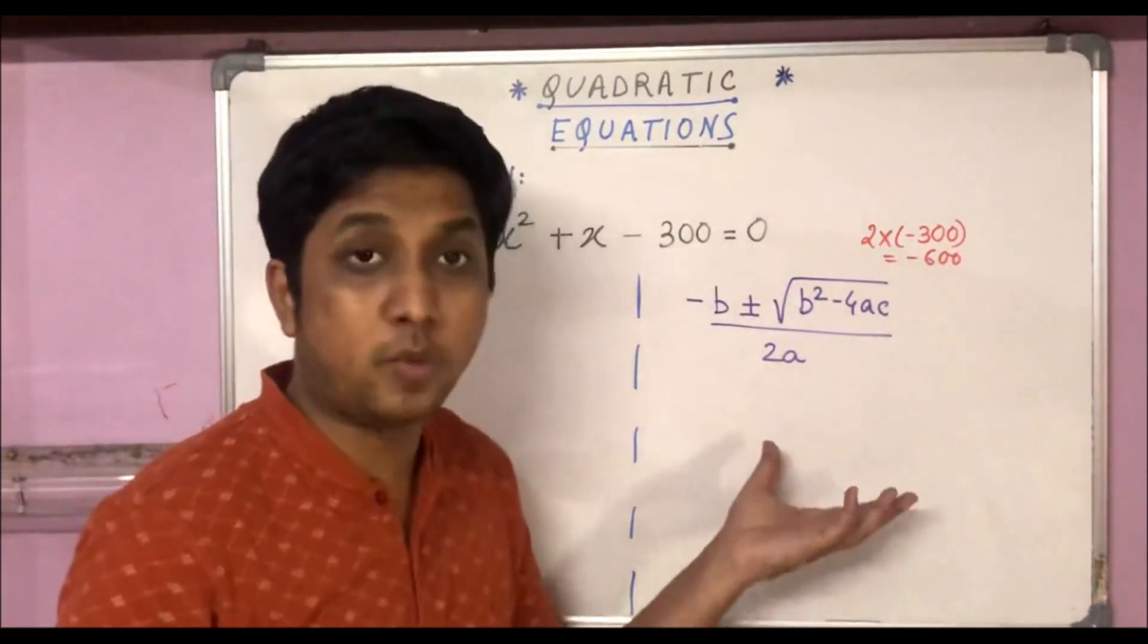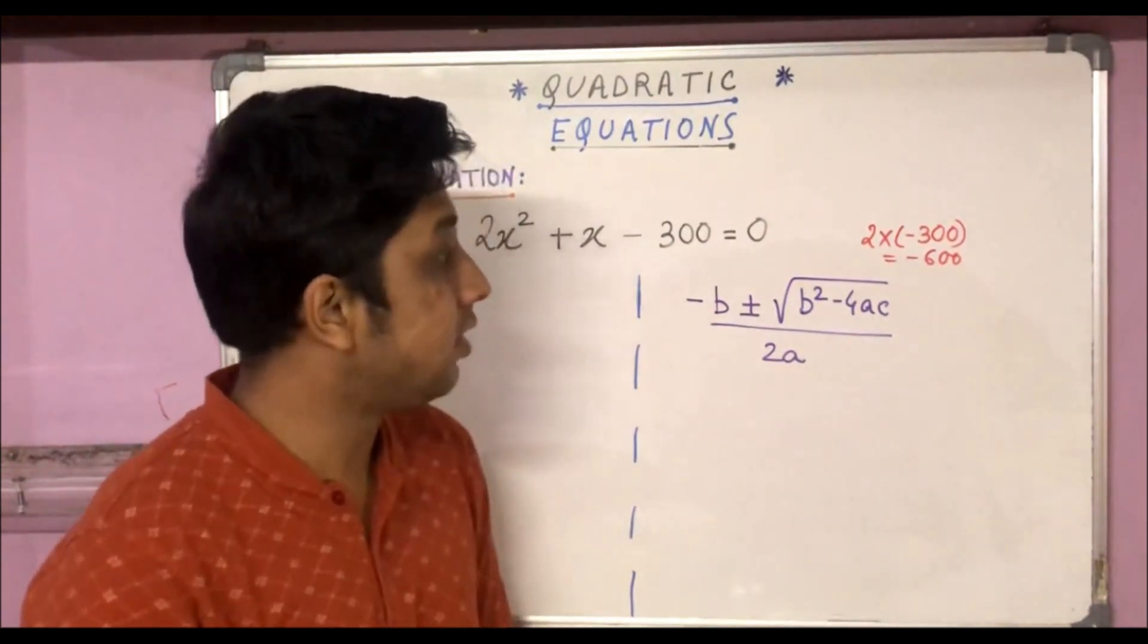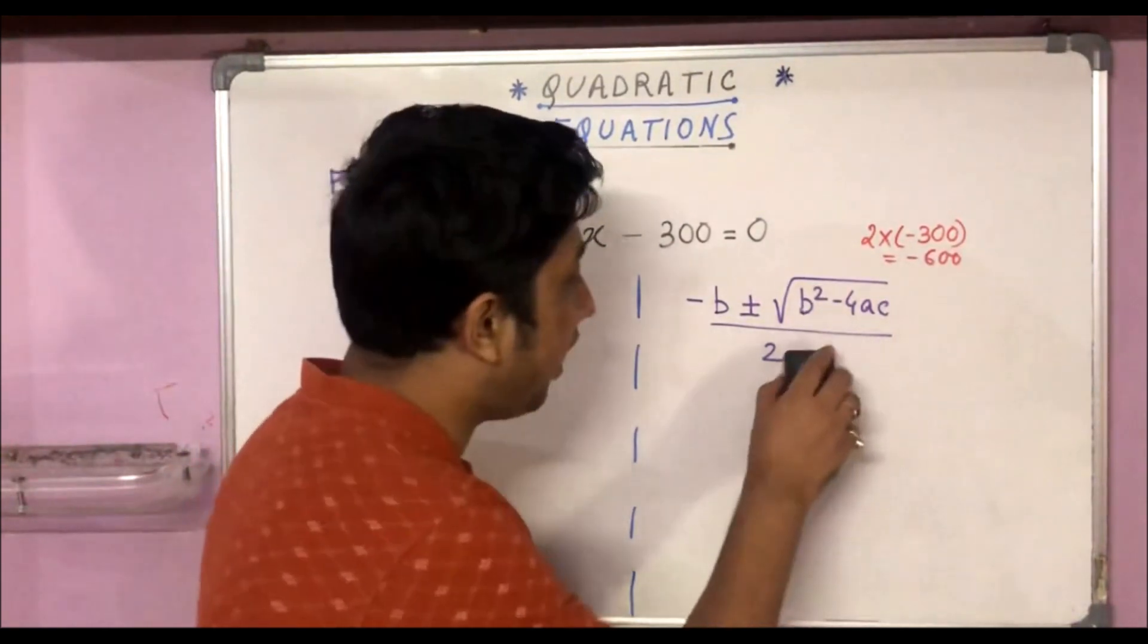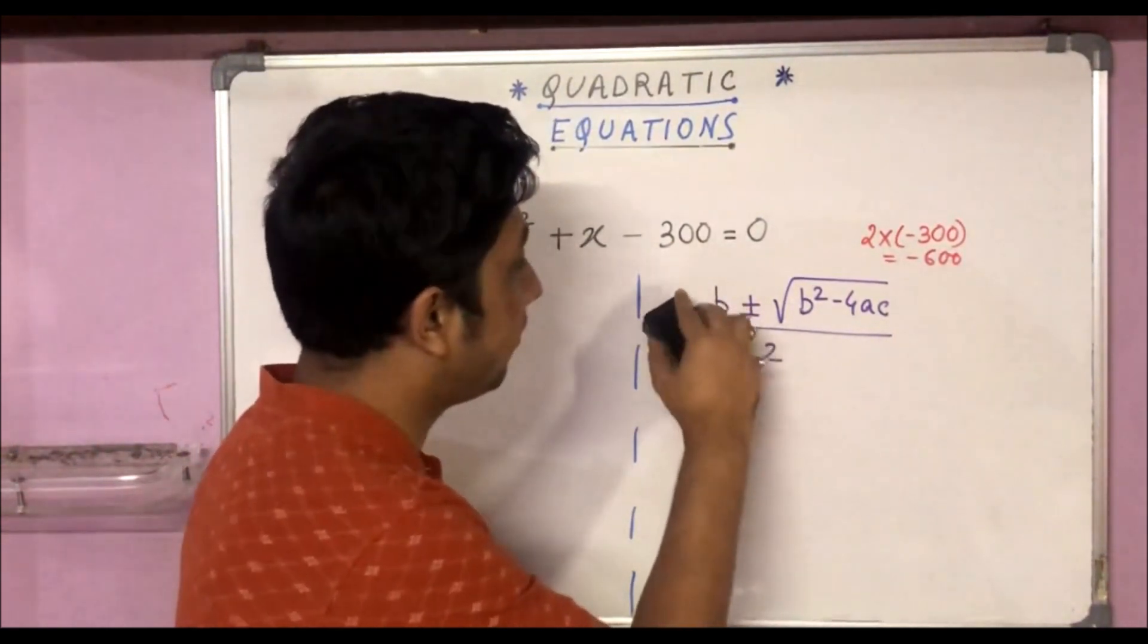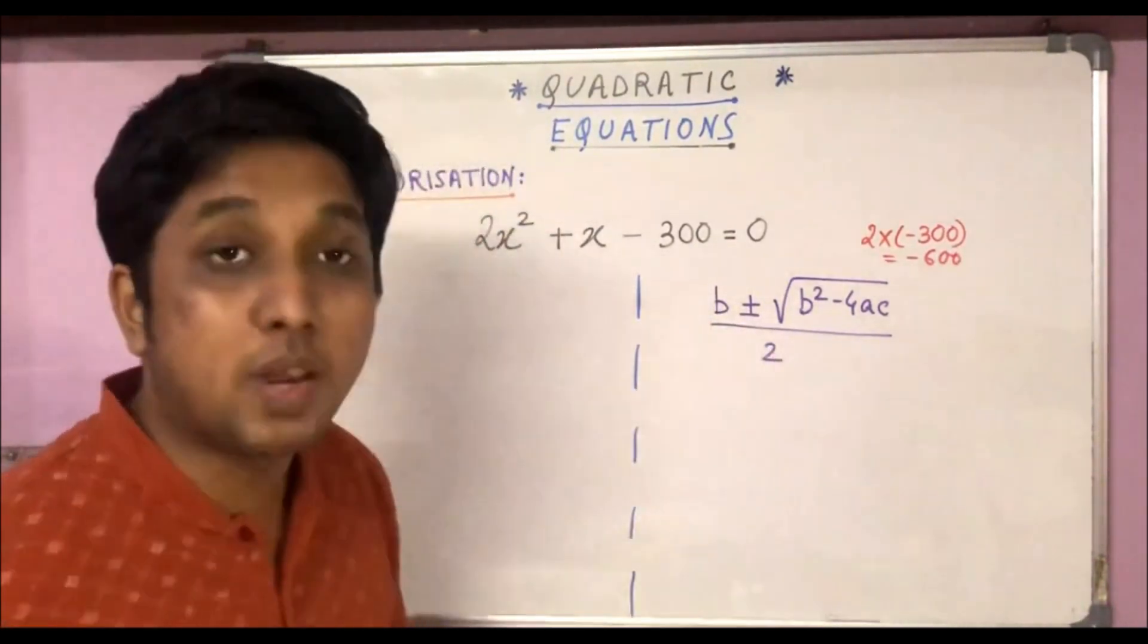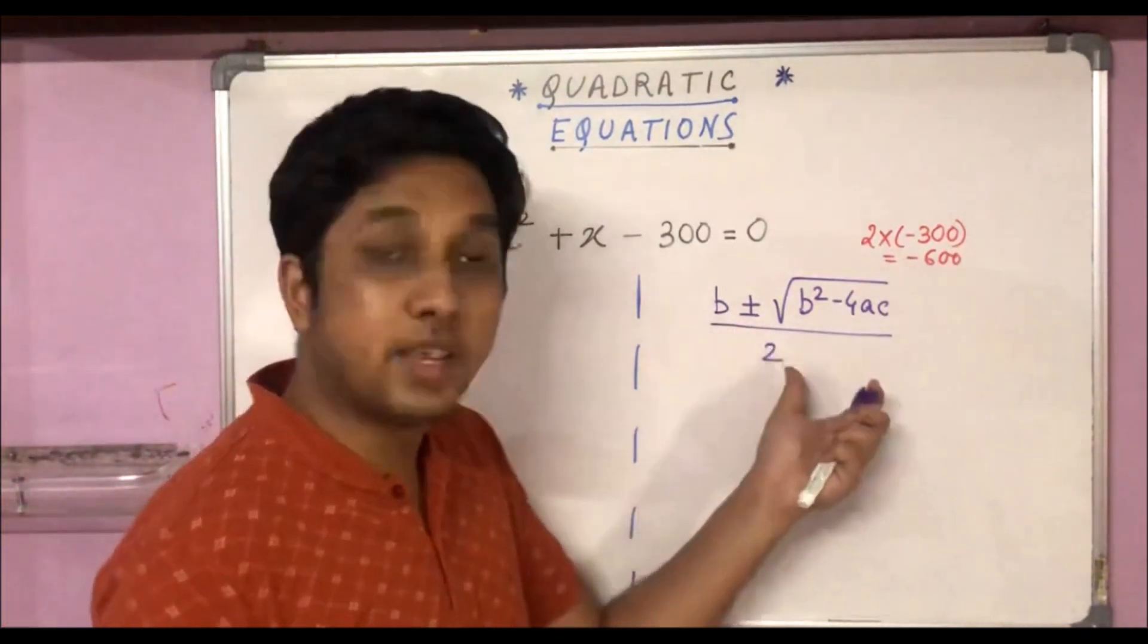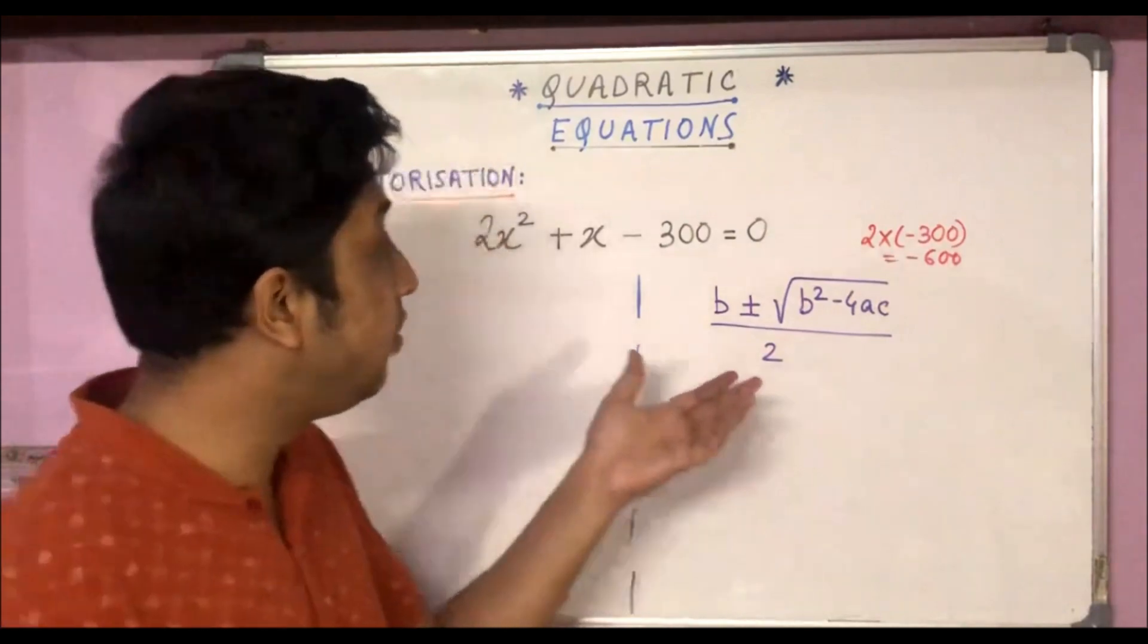This is the quadratic formula which directly finds the roots of the equation. Now what I am suggesting is we just need to remove the a and the minus sign before b, and the remaining expression b plus minus root over b² - 4ac by 2 will give us the values of the midterm break that we need to complete the factorization.